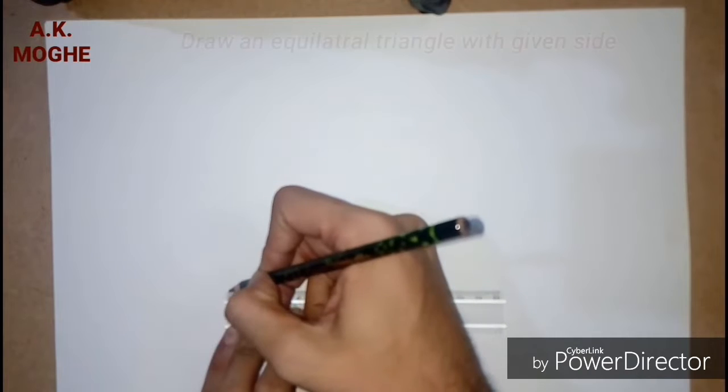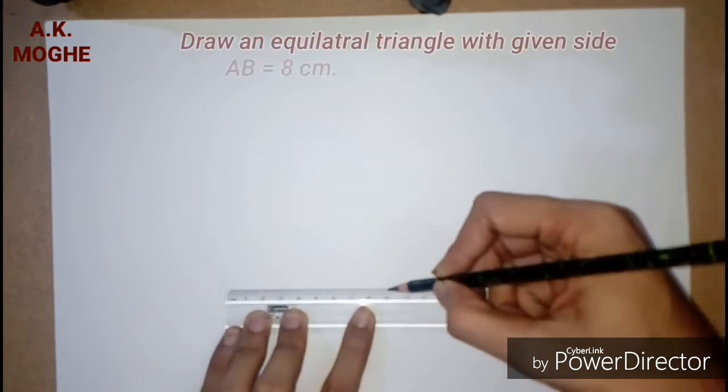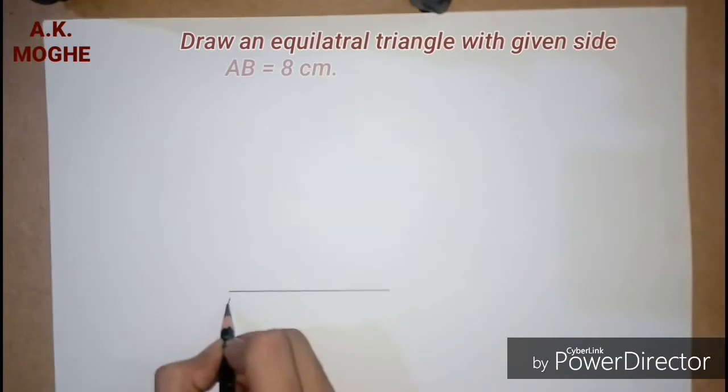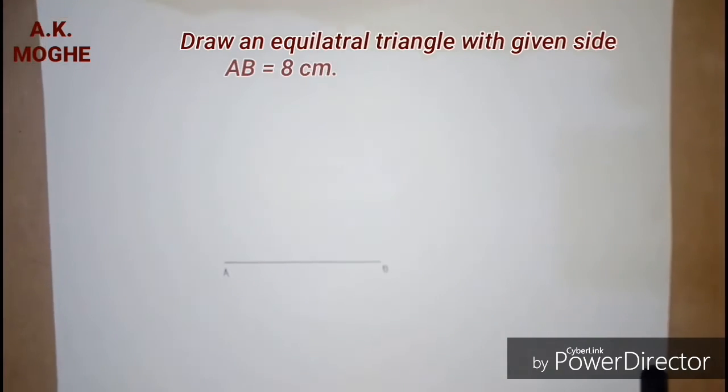Let's start the video tutorial. The first problem is how to draw an equilateral triangle with 8 centimeter base. Draw line AB of 8 centimeter and take the same measurement in a compass, as 8 centimeter.